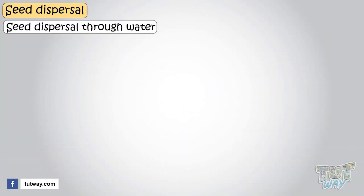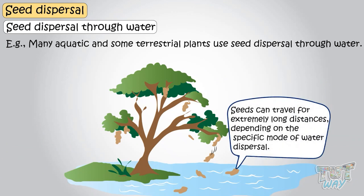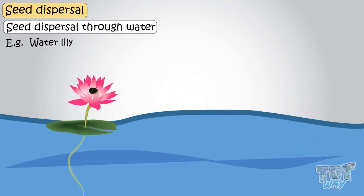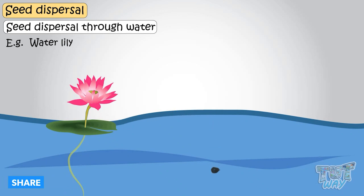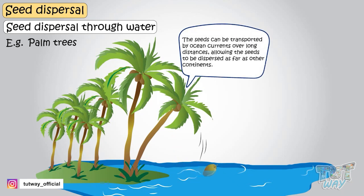Water: many aquatic and some terrestrial plants use seed dispersal through water. Seeds can travel for extremely long distances depending on the specific mode of water dispersal. The water lily is an example — water lilies make a fruit that floats in the water for a while and then drops down to the bottom to take root on the floor of the pond. The seeds of palm trees can also be dispersed by water. If they grow near oceans, the seeds can be transported by ocean currents over long distances, allowing the seeds to be dispersed as far as other continents.